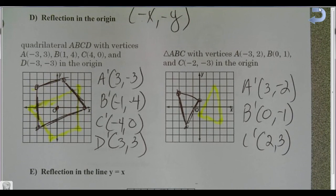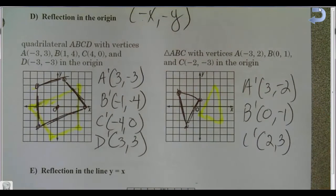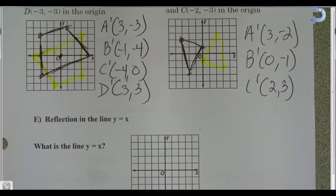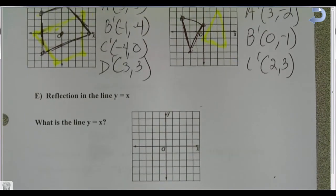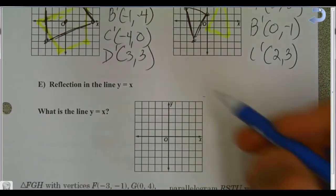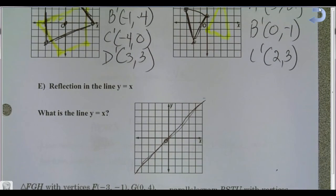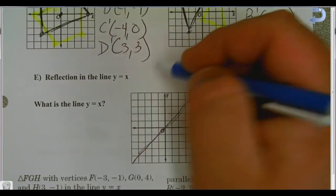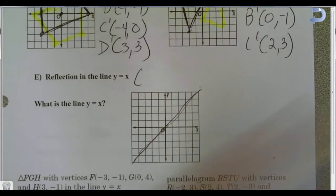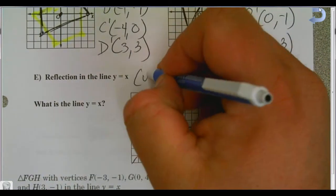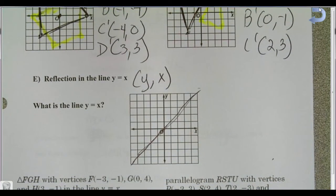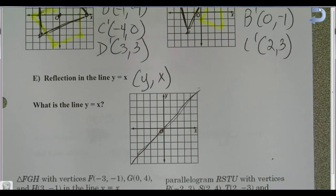The fourth way to reflect is over any line — for example, y = x. The line y = x has a slope of one and runs diagonally through the origin. Since y is equal to x on that line, we can substitute y for x and vice versa. So for a reflection over y = x, we don't change signs — we just swap the x and y coordinates in each ordered pair. Summary: x-axis → change y-signs; y-axis → change x-signs; origin → change both signs; y = x → swap x and y.